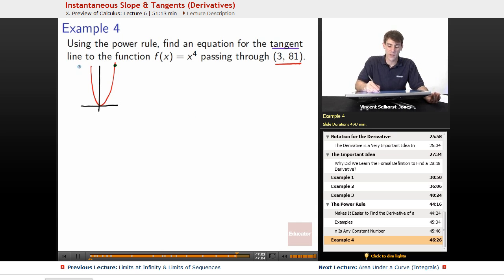So, what we're going to want to find is we want to find the tangent line to the function at this point, 3 comma 81. So, we want to find something that winds up going like this. That's what we're looking for.